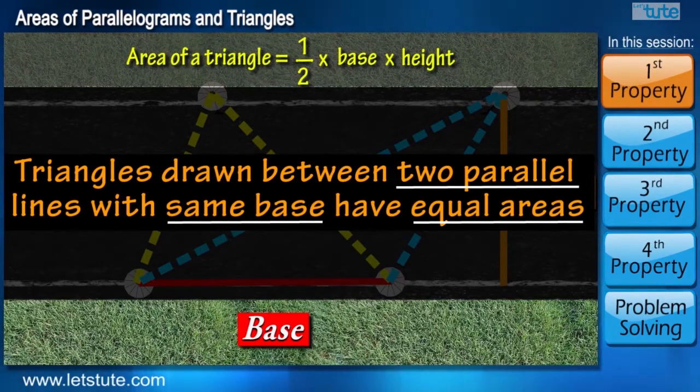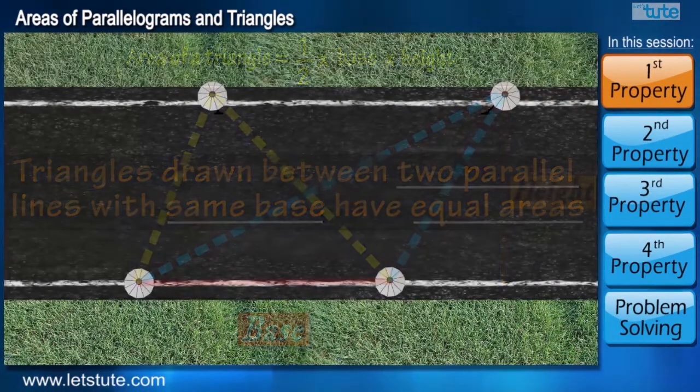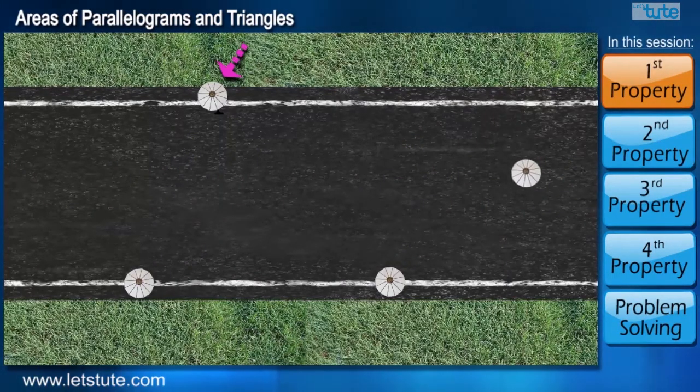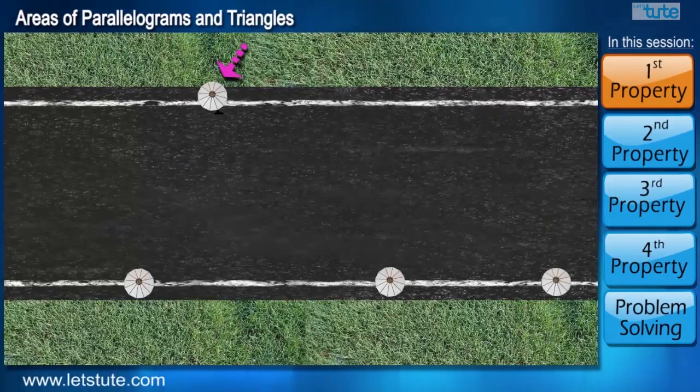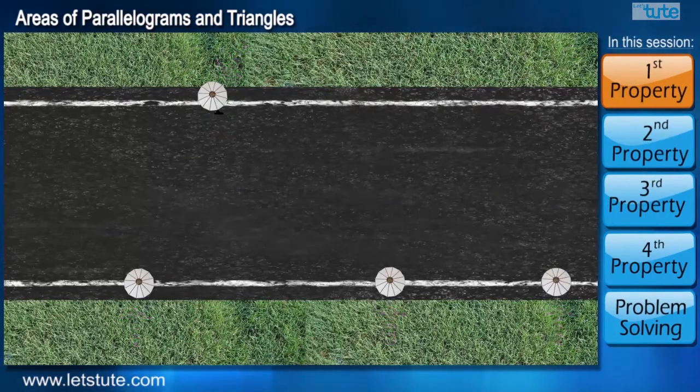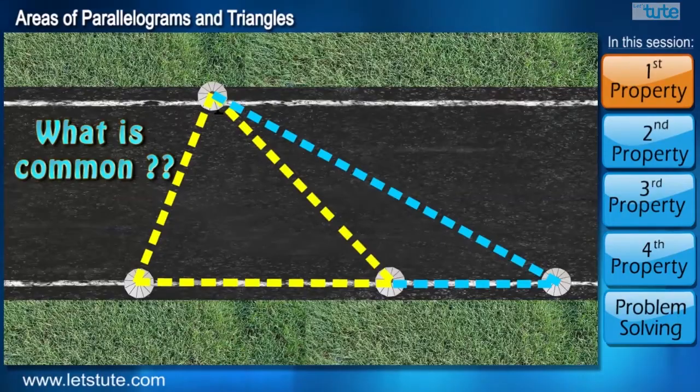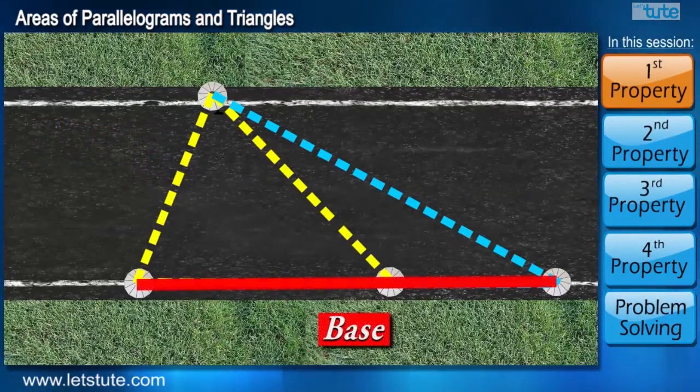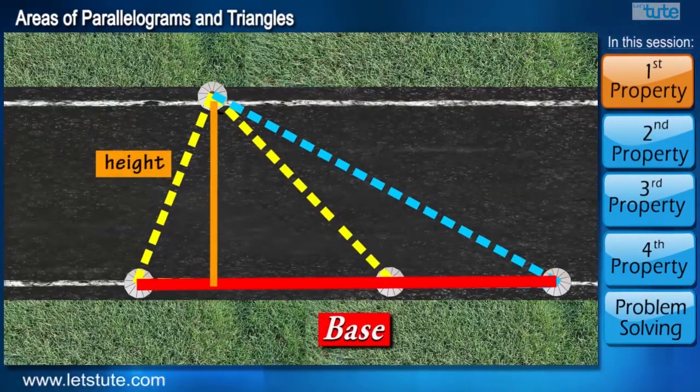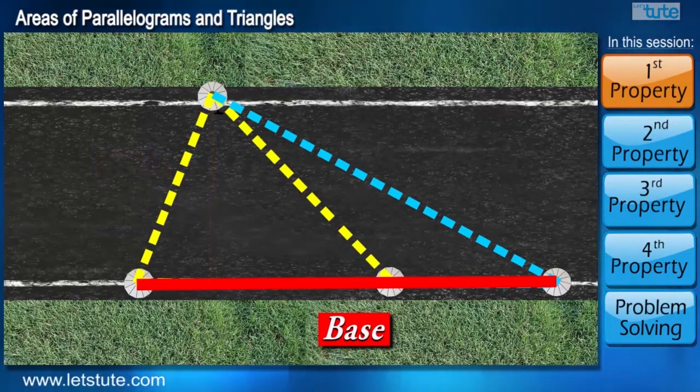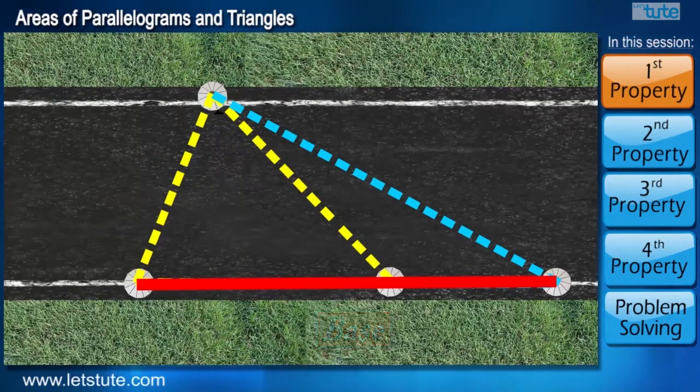Let's try some other combination of triangles and see what we can learn through it. Now consider one light pole on one side and three light poles on other side of the road. Again we have two triangles. Now can you tell me what is common in both of these triangles in terms of base and height? We can see the height of both the triangles is same because they lie between the same parallel lines. But what can we say about the base?